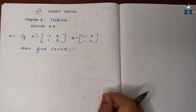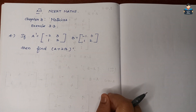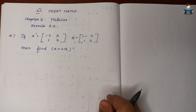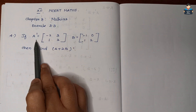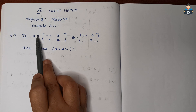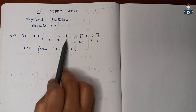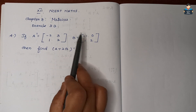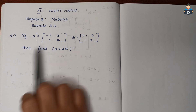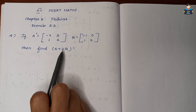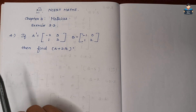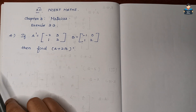Hello everyone, welcome to our channel. In this video we look at Class 12 standard NCERT Maths Chapter 3 Matrices, Exercise 3.3, Question number 4. We are given A transpose as one matrix and B as another matrix, and we need to find out (A + 2B) whole transpose.